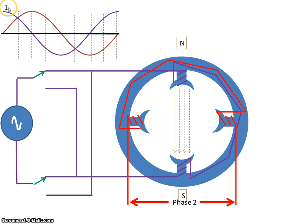Then at time one, no current through these windings, so there's no magnetic field. Current at a maximum in this winding, so let's assume we get a north pole here and a south pole there.